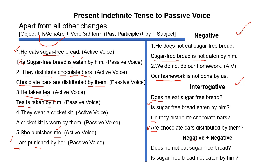Negative interrogative میں: 'Does he not eat sugar free bread?' — 'does' بھی آیا، 'not' بھی آیا۔ ہمارے پاس ویسے بھی is/am/are آتا ہے، سوالیہ میں وہ شروع میں آئے گا اور 'not' اپنی جگہ رہے گا: 'Is sugar free bread not eaten by him?' — کوئی مسئلہ نہیں۔ اس طرح present indefinite tense مکمل ہو گیا۔